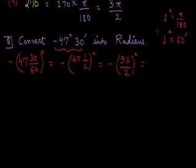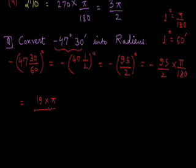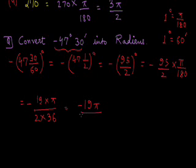After simplification it becomes minus 95 upon 2 degrees. Since 1 degree equals pi by 180 radians, minus 95 upon 2 degrees equals minus 95 upon 2 into pi by 180 radians. Dividing 95 by 5 gives 19, and 180 by 5 gives 36. The 5s cancel, giving 19 pi upon 72. So the result is minus 19 pi by 72 radians.